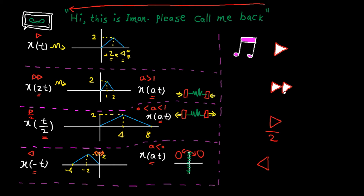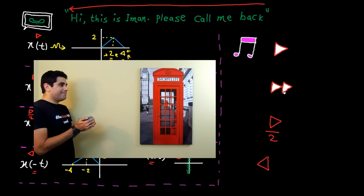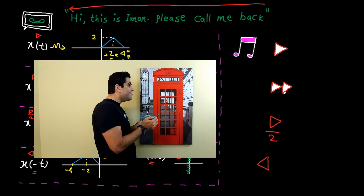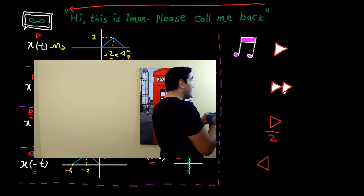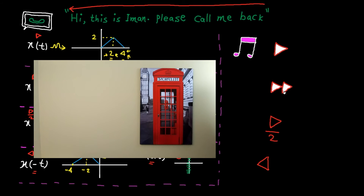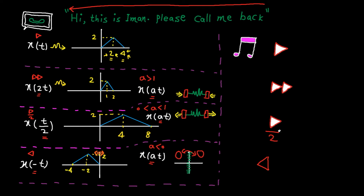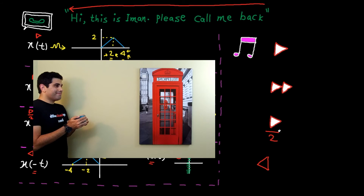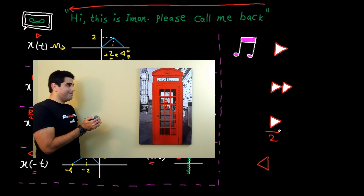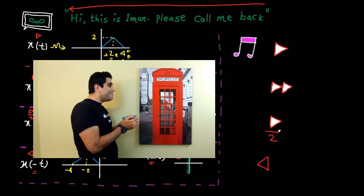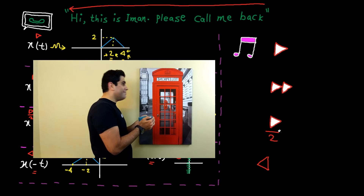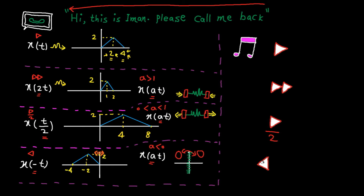Here is x(2t), which means we play the signal two times faster. [double-speed audio plays] And here is x(t/2), which means we play the signal at half speed. [half-speed audio plays] That's boring, let me stop it. And finally, here is x(-t), which means we play the signal from the end to the beginning. [reversed audio plays]